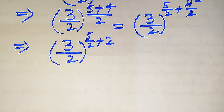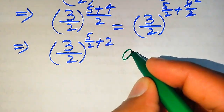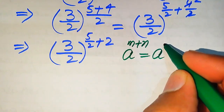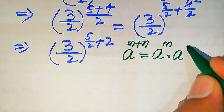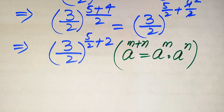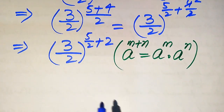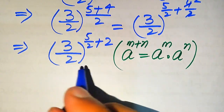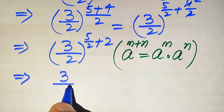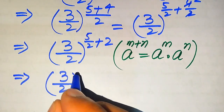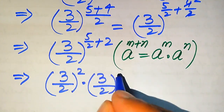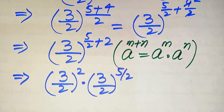We need another exponential law: a to the power of (m plus n) equals a to the power of m multiplied by a to the power of n. Applying this law, we break the exponents as (3 divided by 2) to the power of 2 multiplied by (3 divided by 2) to the power of 5 over 2.